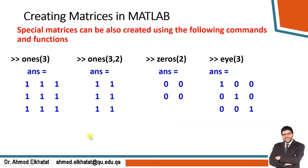MATLAB also has special built-in matrices. ones(3, 2) creates a 3×2 matrix of all ones. zeros(3, 2) creates a 3×2 matrix of all zeros. There is also the identity matrix — eye(n) — which has ones on the diagonal and zeros everywhere else, and is important for many calculations.